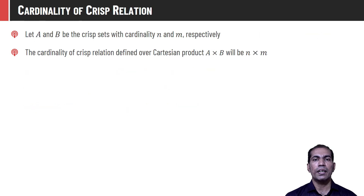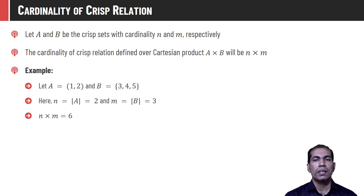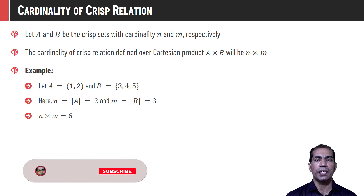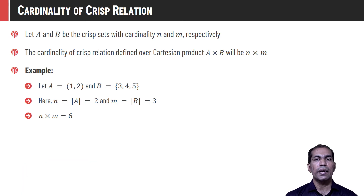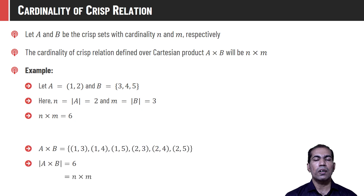Cardinality of a crisp set is defined by the number of elements in that set. Assume A and B are two crisp sets having cardinality N and M. The Cartesian product A×B has cardinality N×M. Let us prove it: consider set A = {1, 2} and B = {3, 4, 5}, so N = 2 and M = 3, giving N×M = 6. The Cartesian product is: (1,3), (1,4), (1,5), (2,3), (2,4), (2,5) — which contains 6 elements. So the cardinality of the Cartesian product is 6, which is N×M, proving that cardinality of the Cartesian product equals the multiplication of the cardinalities of the individual sets.